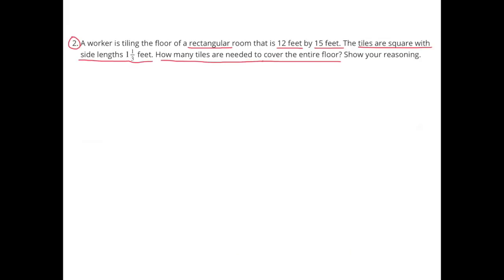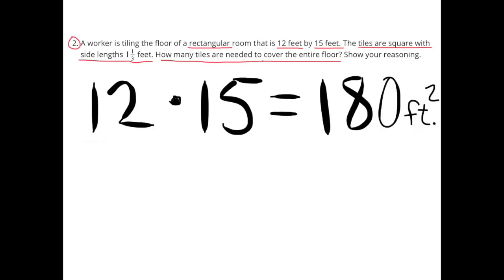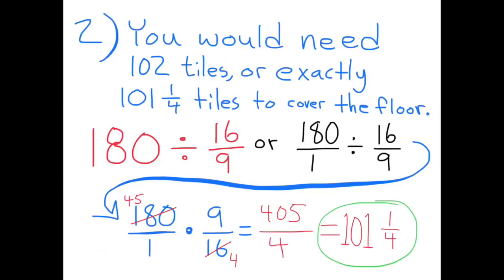Number 2: A worker is tiling the floor of a rectangular room that is 12 feet by 15 feet. The tiles are square with side lengths of 1 and 1 third feet. How many tiles are needed to cover the entire floor? 12 times 15 equals 180 feet squared. The area of the tile is 16 ninths. So 180 divided by 16 ninths equals 180 times 9 sixteenths, or 45 times 9 fourths, which equals 101 and 1 fourth. You would need 102 tiles, or exactly 101 and 1 fourth tiles, to cover the floor.